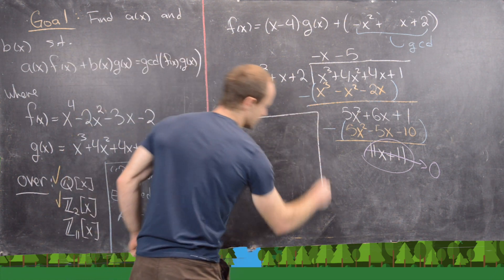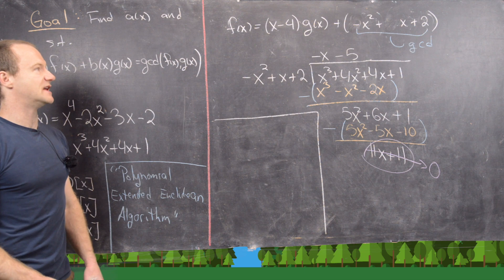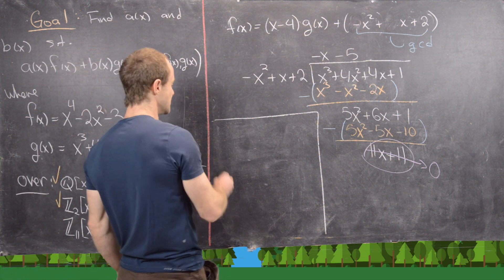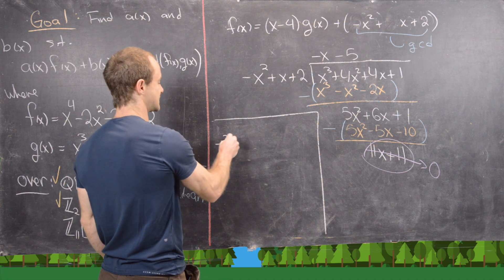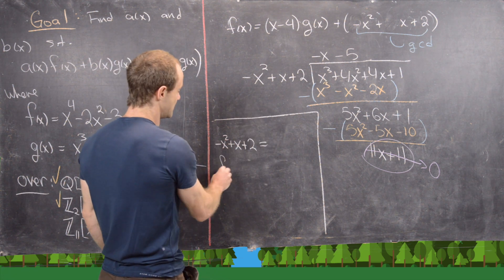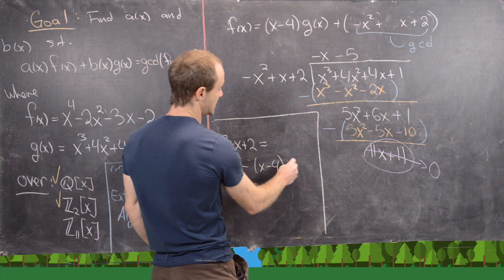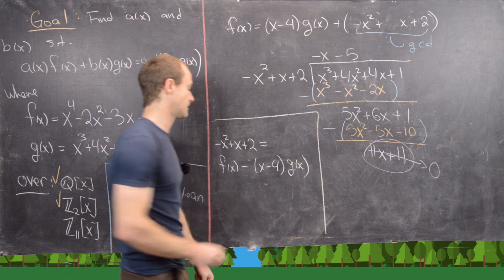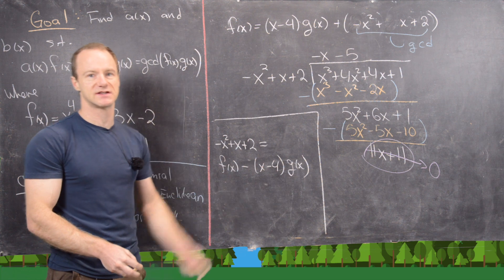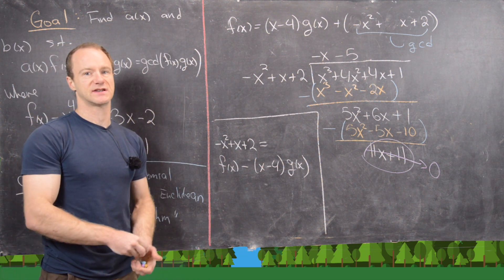Since the remainder is zero, the last non-zero remainder is −x² + x + 2, which is the GCD of f and g over Z11. We can easily write it as a linear combination: −x² + x + 2 = f(x) − (x − 4)·g(x), directly from the first division equation. So we've written the GCD as a combination of f and g in just one step.